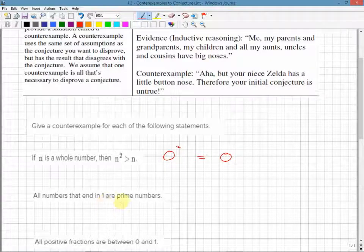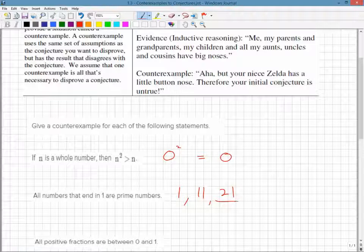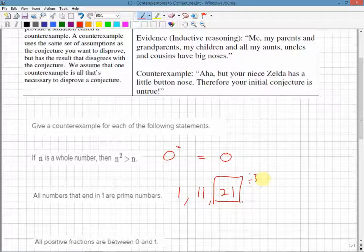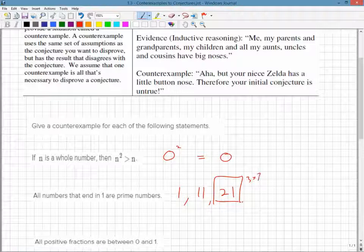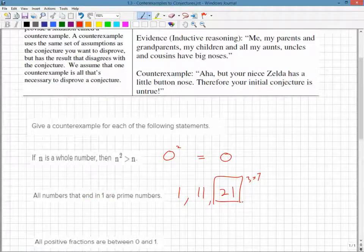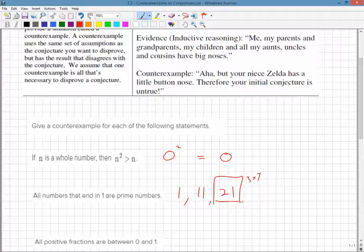All numbers that end in 1 are prime numbers. That's almost true. 1 is prime. 11 is prime. But 21? Wait a second. That one is divisible by 3, because 3 times 7 is 21. Therefore, we found one counterexample. That's an untrue statement.